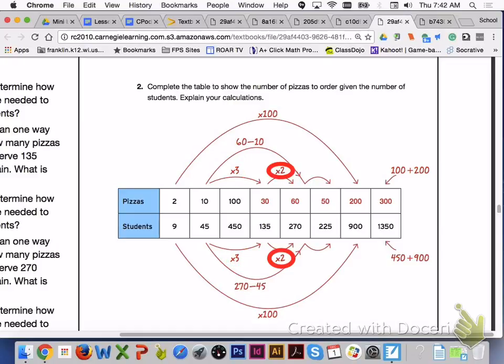For the ratio of 60 to 270, I multiplied 30 times 2 and 135 times 2 for my equivalent ratio.